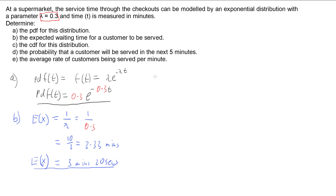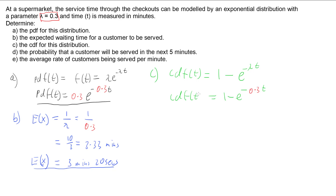Part C is the CDF. The cumulative distribution function is given by 1 minus e to the negative lambda t. We've got lambda of 0.3, so we're going to have 1 minus e to the negative 0.3t. And that's all we have to do — our CDF of time is that function.